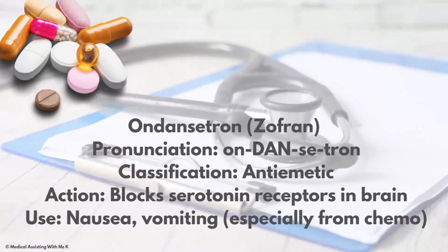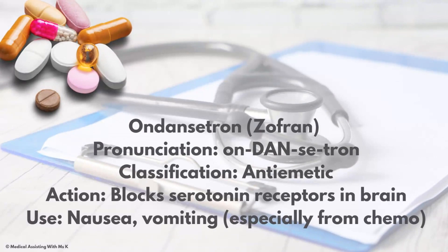Zofran is an antiemetic — antiemetic is for nausea. This is very important to know because on the test they may name Zofran and ask what it's used for: nausea. The generic is ondansetron. Action: it blocks serotonin receptors in the brain. Use: nausea and vomiting, especially from chemotherapy.